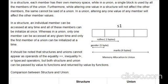In structures, if you make changes to one value, it will not affect the other members. In a union, altering any one value will affect the other member values. We can access and store all members at a time in structures, whereas in unions, only one member can be accessed at any given time and only one member can be initialized at a time.